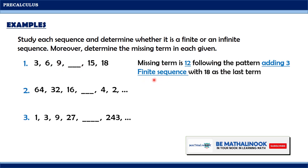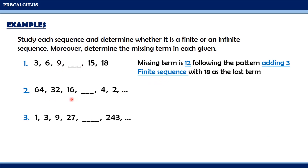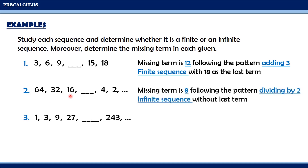Moving on to the second one, the first term is 64, followed by 32, then 16. The pattern is dividing by 2. 64 divided by 2 gives 32, and 32 divided by 2 gives 16. Therefore, the missing term is 16 divided by 2, which gives us 8. Since the sequence has an ellipsis at the end, it is an infinite sequence, because there are many more terms after 2.